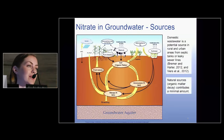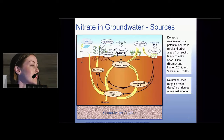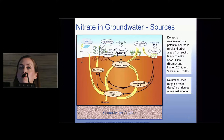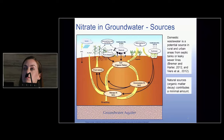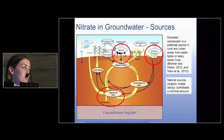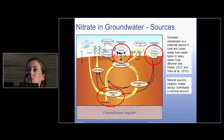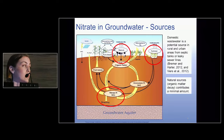Here's a schematic of the nitrogen cycle. The important thing to remember is that nitrate is a naturally occurring form of nitrogen. The problem arises when manure or fertilizers applied to the surface cause a buildup of nitrogen, much of which gets converted to nitrate and leaches to groundwater. Domestic wastewater from septic sources or wastewater treatment plants can be another source, especially where there are densely located septic systems or a direct path from a single system to a well. Natural sources are another potential contributor, but in a minimal amount.